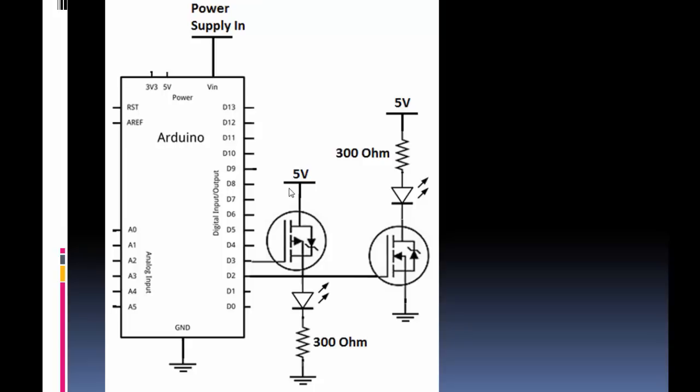If we have the source at 5 volts and the gate at 0 volts, that's essentially a negative potential from the gate to the source, and current's going to flow.